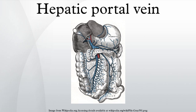Accessory hepatic portal veins are those veins that drain directly into the liver without joining the hepatic portal vein. These include the paraumbilical veins as well as veins of the lesser omentum, falciform ligament, and those draining the gallbladder wall.